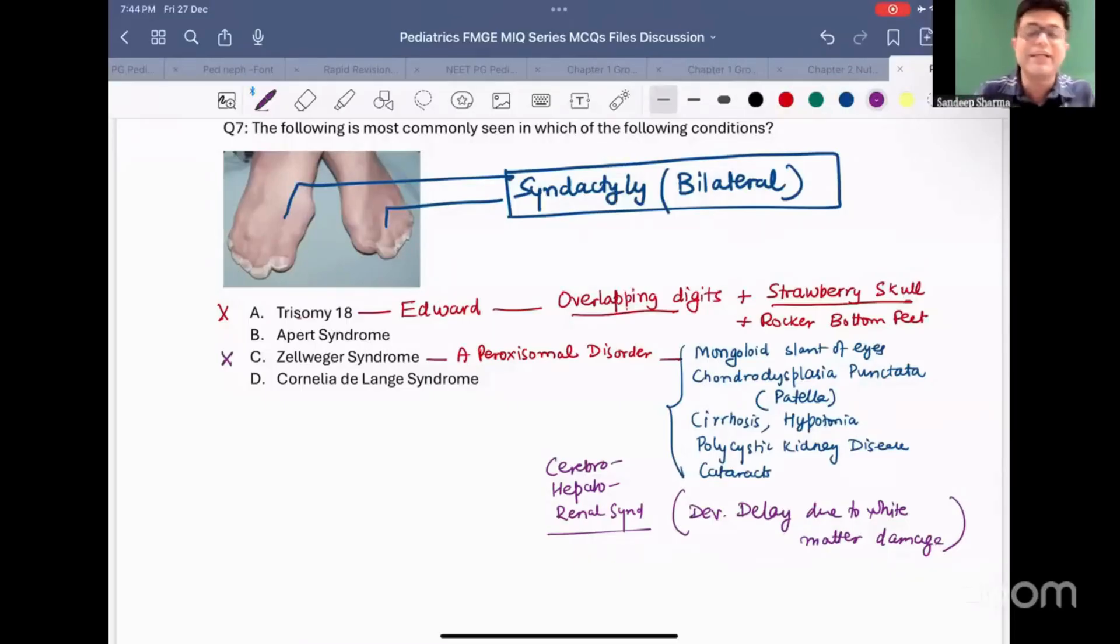Now, what about Cornelia de Lange syndrome? Important thing to remember. How to remember Cornelia de Lange syndrome? I will make a face like this. This is a child and look at the eyes. This is the eyebrow. Don't you think it is too bushy which I have made? Very bushy eyebrow and joined with a line in the center.